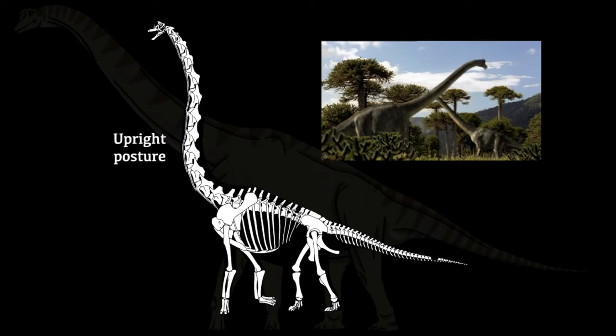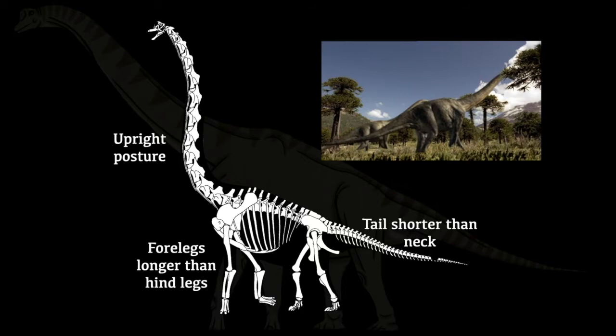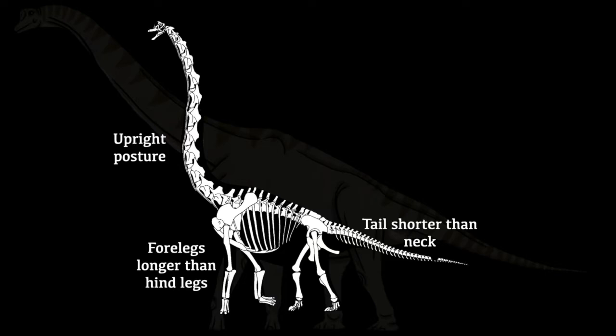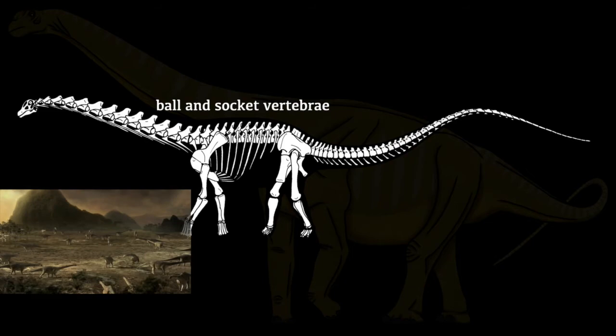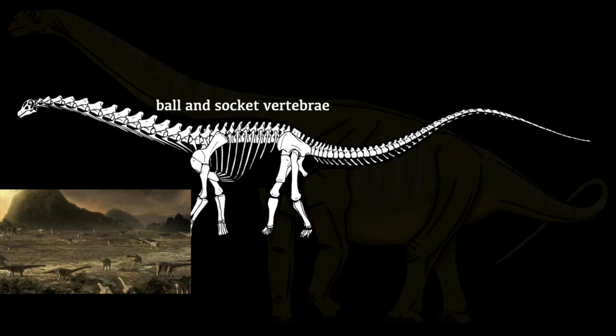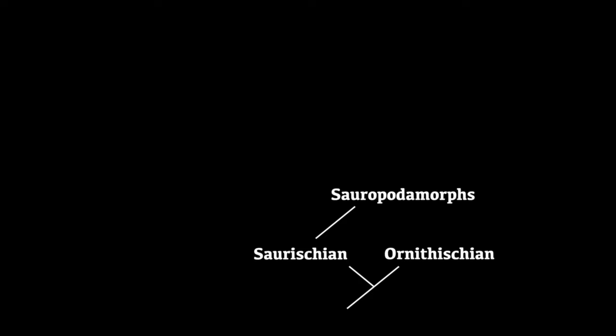Next were the brachiosaurids, defined by their upright posture reaching high to the treetops. Forelegs longer than hind legs allowed the neck to rise right off the shoulders, and they had a shorter tail as less counterbalancing was required. Examples are Brachiosaurus, Giraffatitan, and Lusotitan. Finally, there were the titanosaurids — famous for including some of the largest land animals ever to walk the planet, though size is not a defining feature. The only real diagnostic characteristic is a ball-and-socket joint between the vertebrae. Titanosaurs are found mostly in South America and include Argentinosaurus, Malawisaurus, and Alamosaurus.